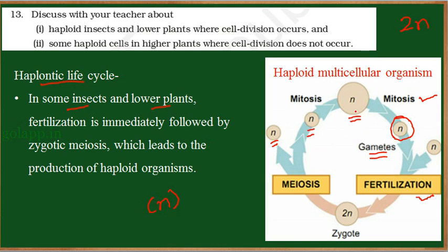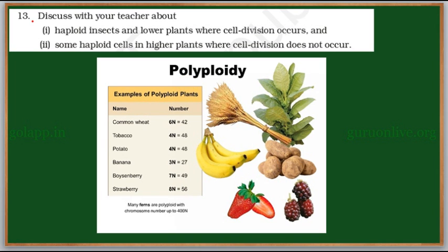All the cells in the adult will be haploid — such life cycles are called haploidic life cycles. Haploid cells divide and continue the life cycle. These life cycles are seen in certain insects and lower plants. Now the second question is about haploid cells in higher plants where cell division does not occur.